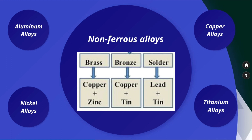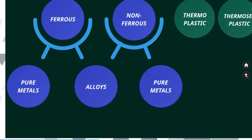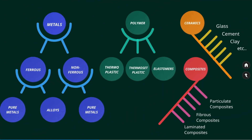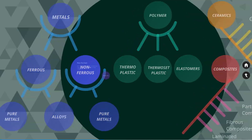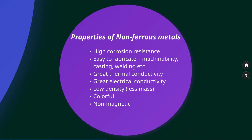Non-ferrous metals are those which do not contain iron. We have already seen the non-ferrous metal alloys. Non-ferrous metals are softer and therefore more malleable. Properties of non-ferrous metals include high corrosion resistance, easy to fabricate, great thermal conductivity, great electrical conductivity, and low density.